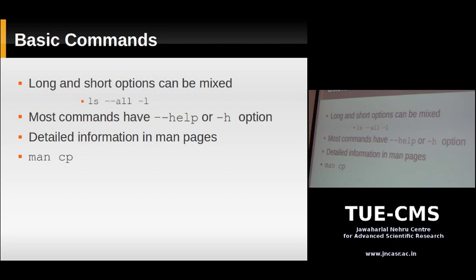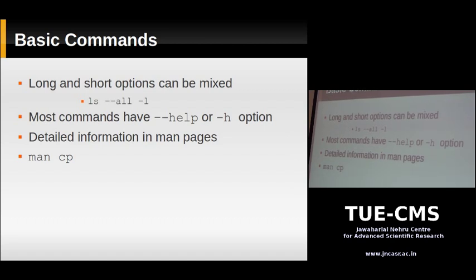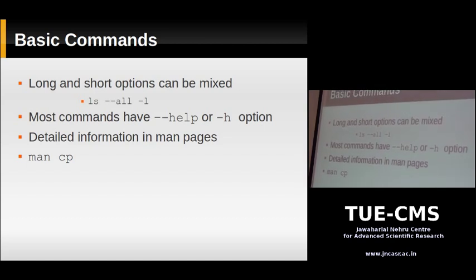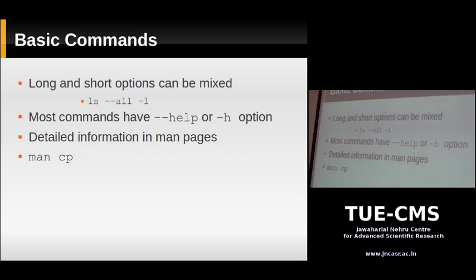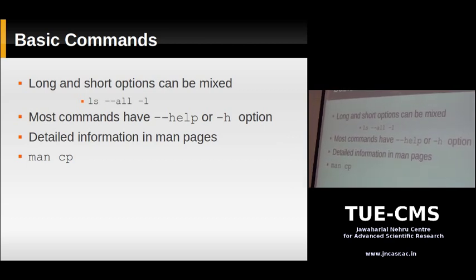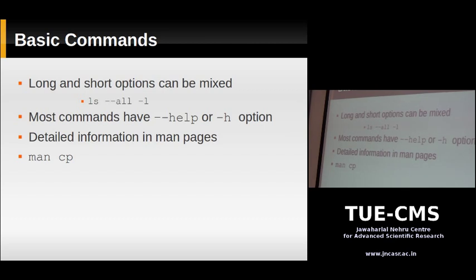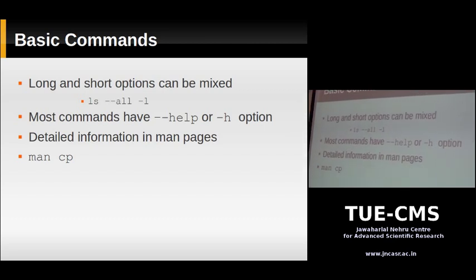Many commands have an option called '--help' or '-h'. When you pass this option, the command prints a short summary of how to use that program. So if you forgot an option — for example, the option to sort files by date — you can type 'ls -h' or 'ls --help' and see a summary of all accepted options. You'd find the '-t' option which sorts files by modification date.